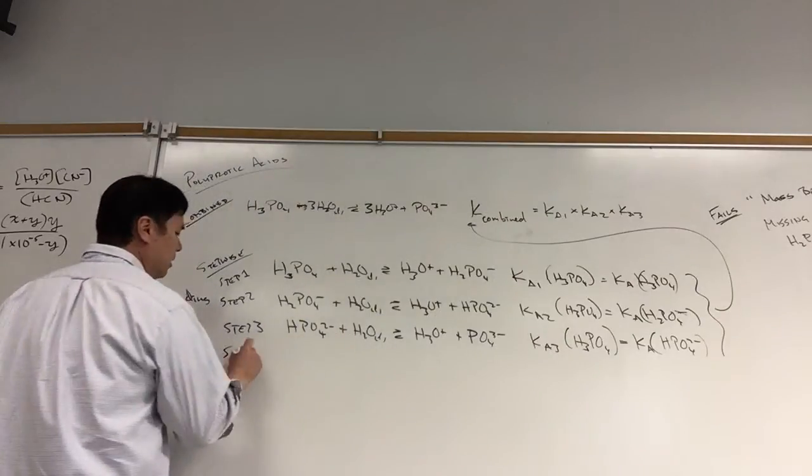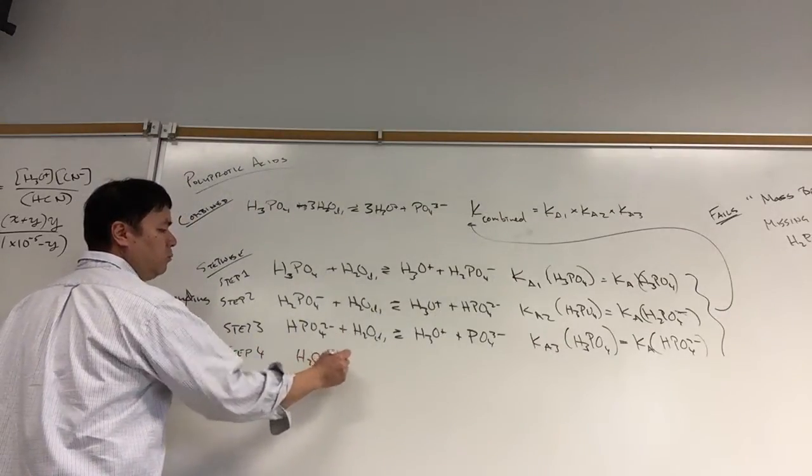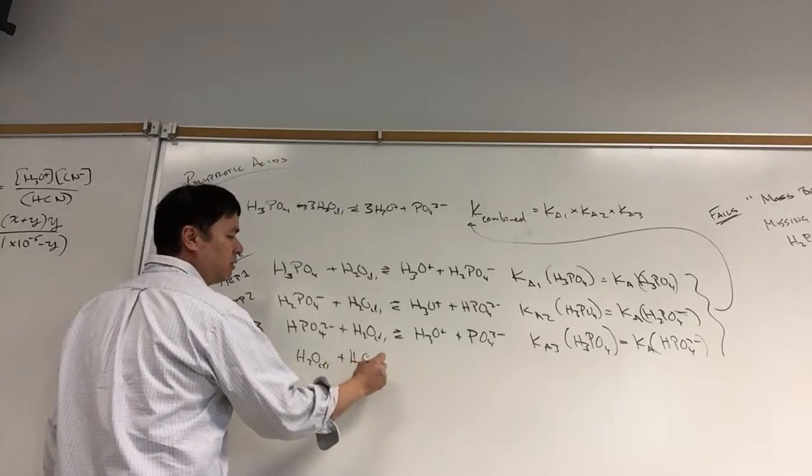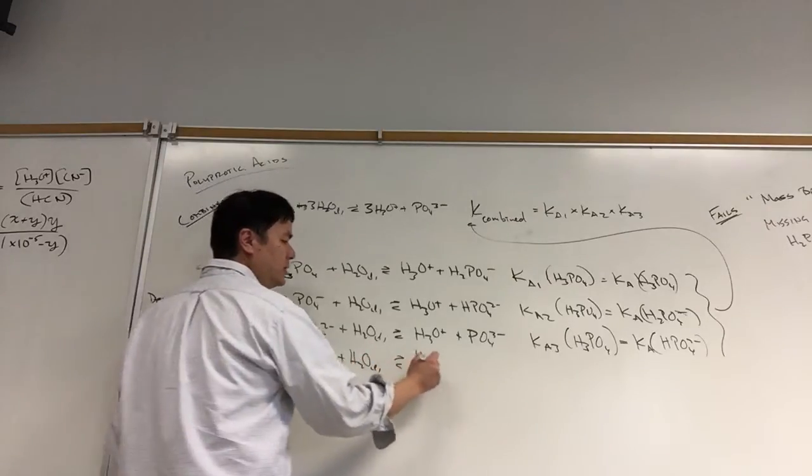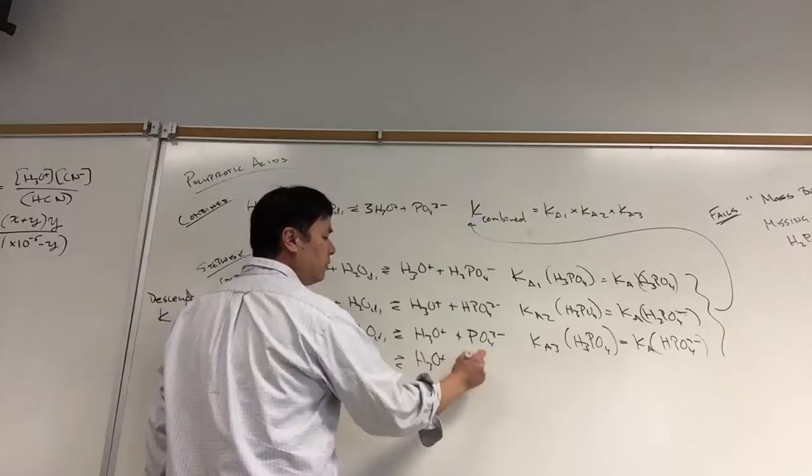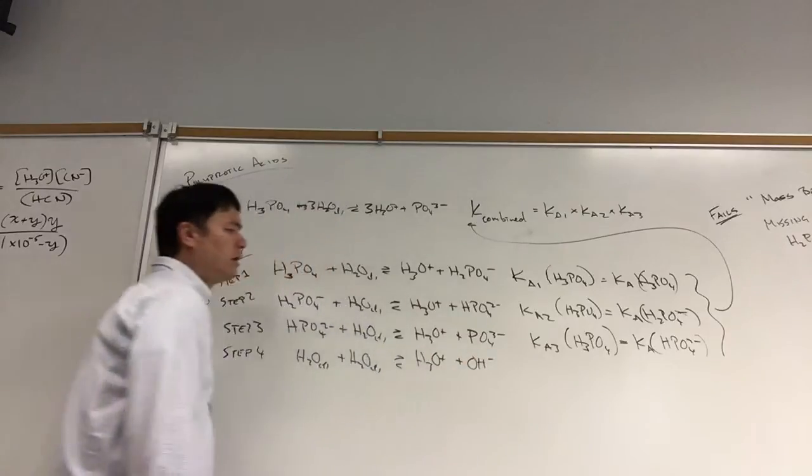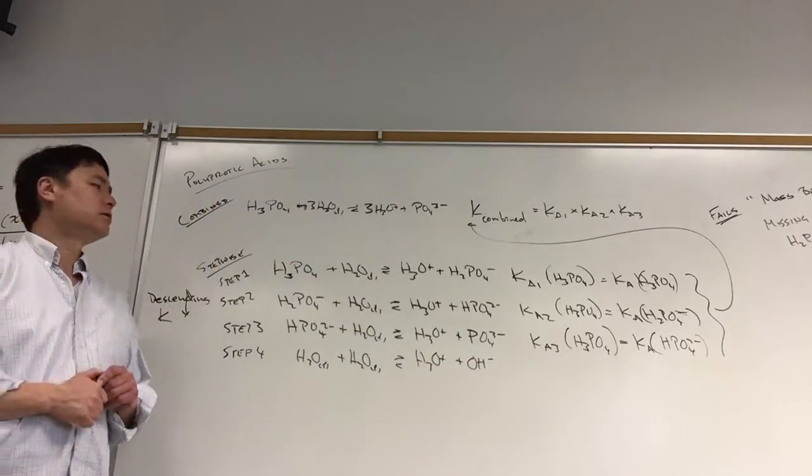And then finally we're going to add step four. Step four is water. We can't stop waters from colliding. At 25 degrees C they're going to collide to form hydronium and hydroxide, and we have to factor in that equilibrium as well.